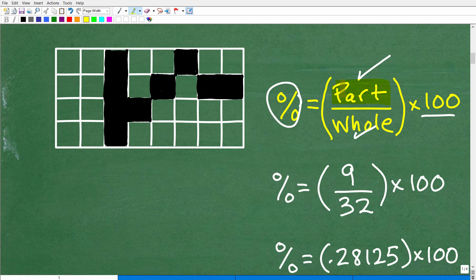All right, so what is the part? Well, the part is how much of this grid is shaded. So let's just count this up: 1, 2, 3, 4, 5, 6, 7, 8, 9. Okay, so 9 of the boxes here are shaded.